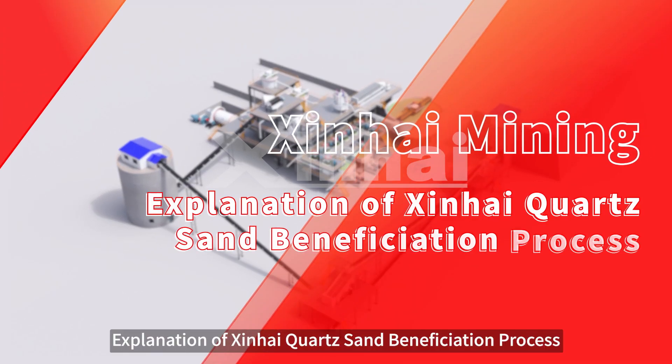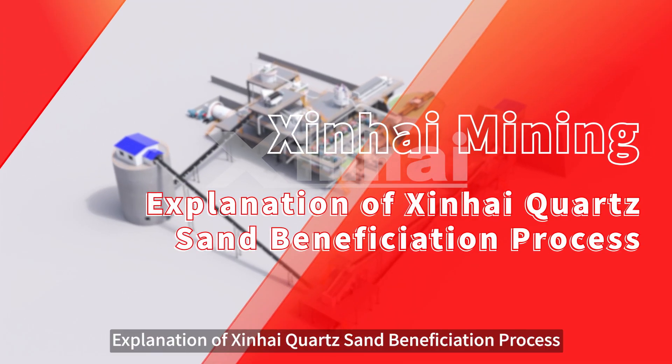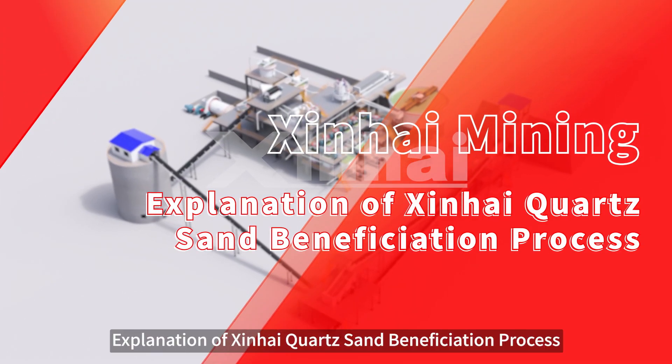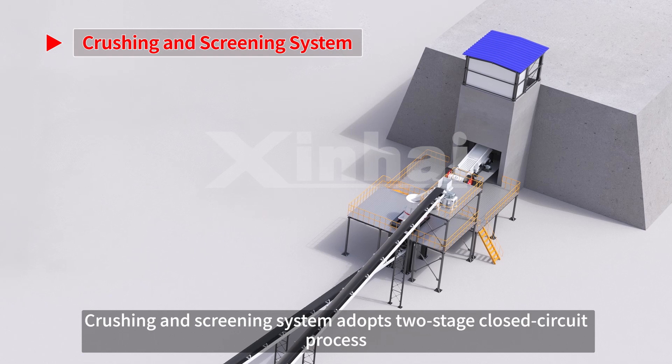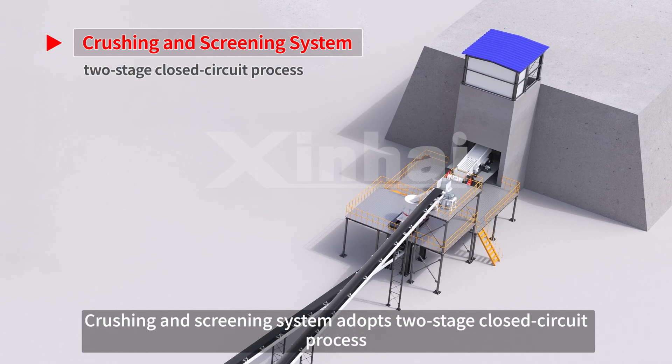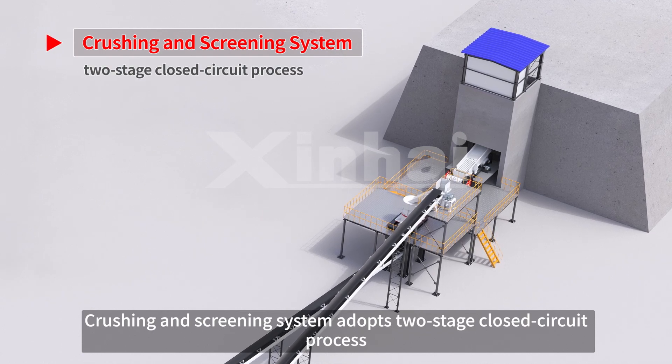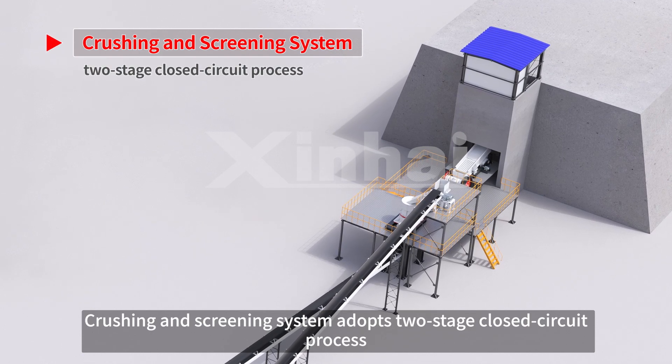Explanation of the Sheen High Quartz Sand Beneficiation Process. The Crushing and Screening System adopts a two-stage closed-circuit process.